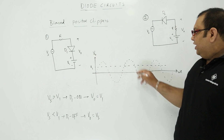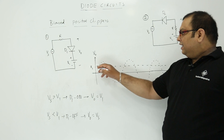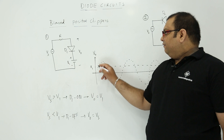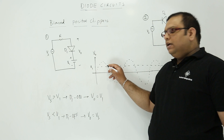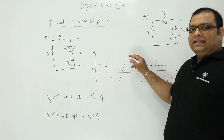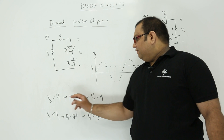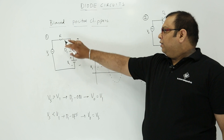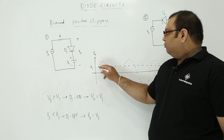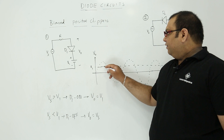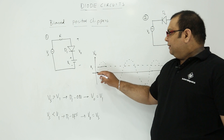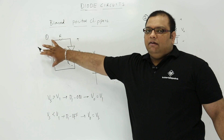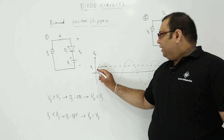Now let us represent this on the waveform. This is the input waveform shown in dotted lines. We take V1 as the reference signal. When the input signal is more than V1 — this peak is more than V1 — diode D1 is in on condition and output voltage is clipped to V1. When Vs is greater than V1, output is clipped to V1 only. During the period when input is less than V1, diode is off and you get the same output voltage as the input.